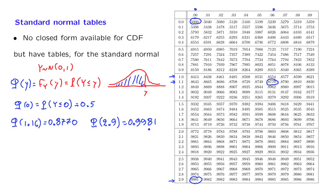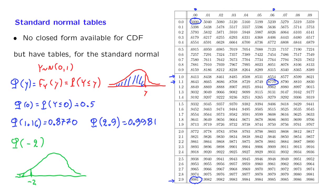By looking at this number, we can tell that a standard normal random variable has extremely low probability of being bigger than 2.9. Now, notice that the table specifies phi of y for y being non-negative. What if we wish to calculate, for example, the value of phi of minus 2? In terms of a picture, this is a standard normal — here is minus 2 — and we wish to calculate this probability. There's nothing in the table that gives us this probability directly, but we can argue as follows.